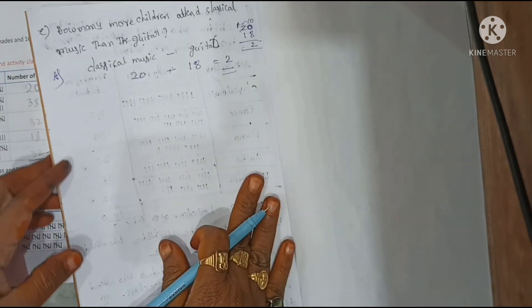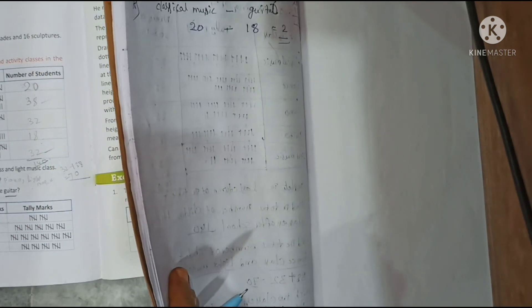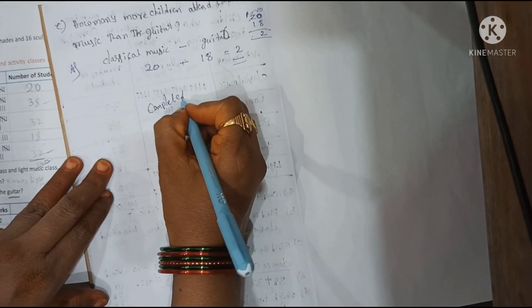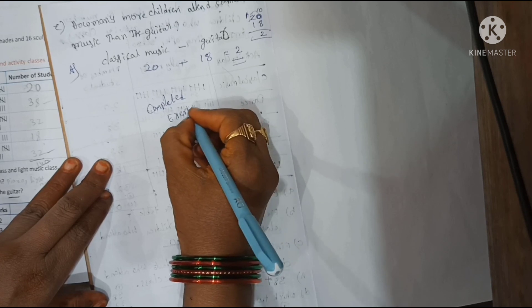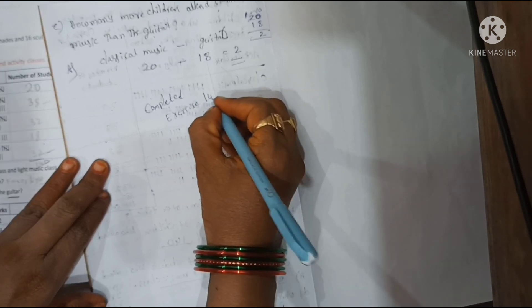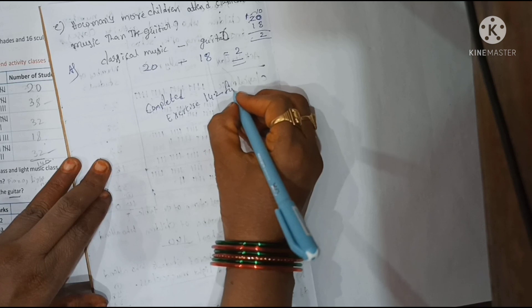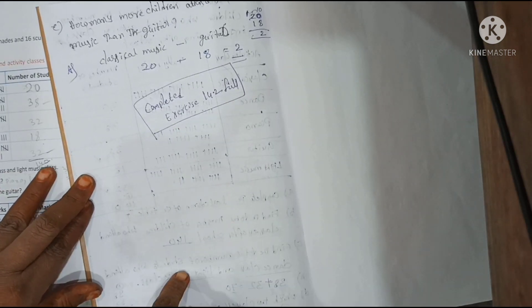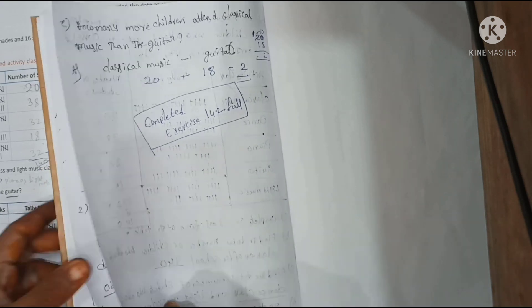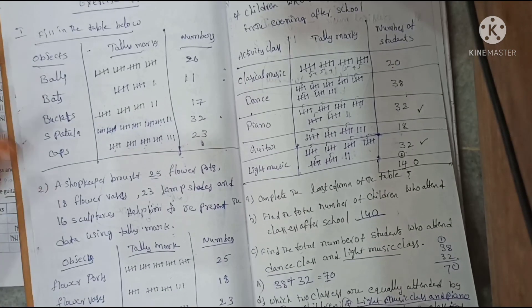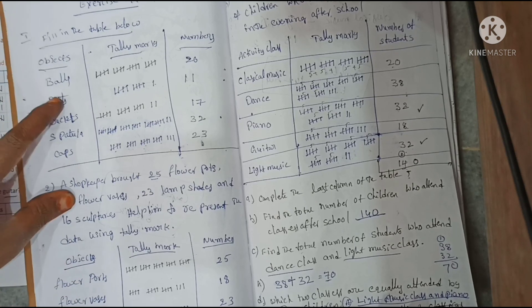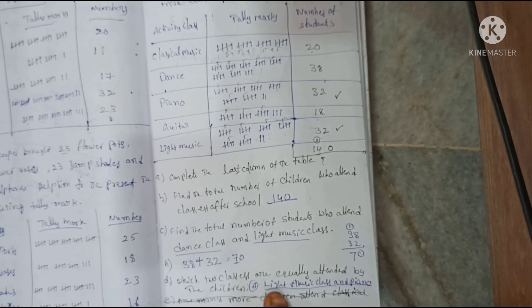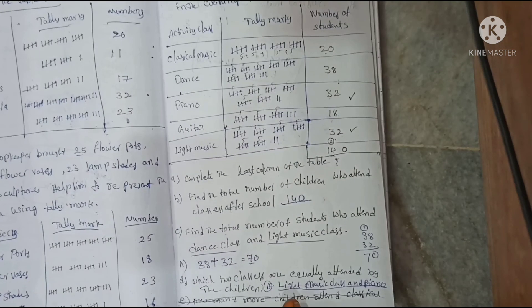Exercise 14.2 is now complete. There were 3 sums with 5 questions in total, and all questions are answered.